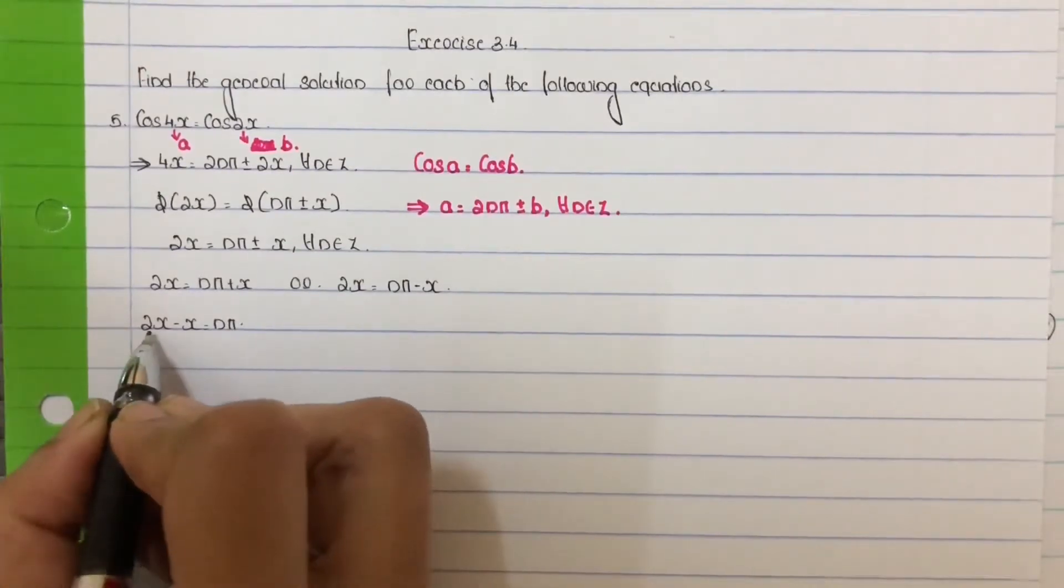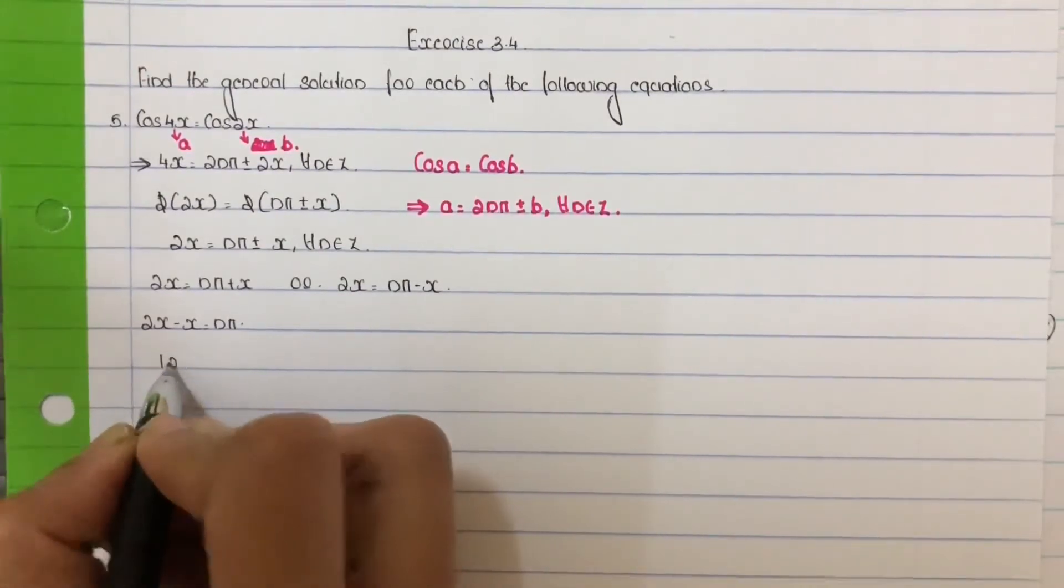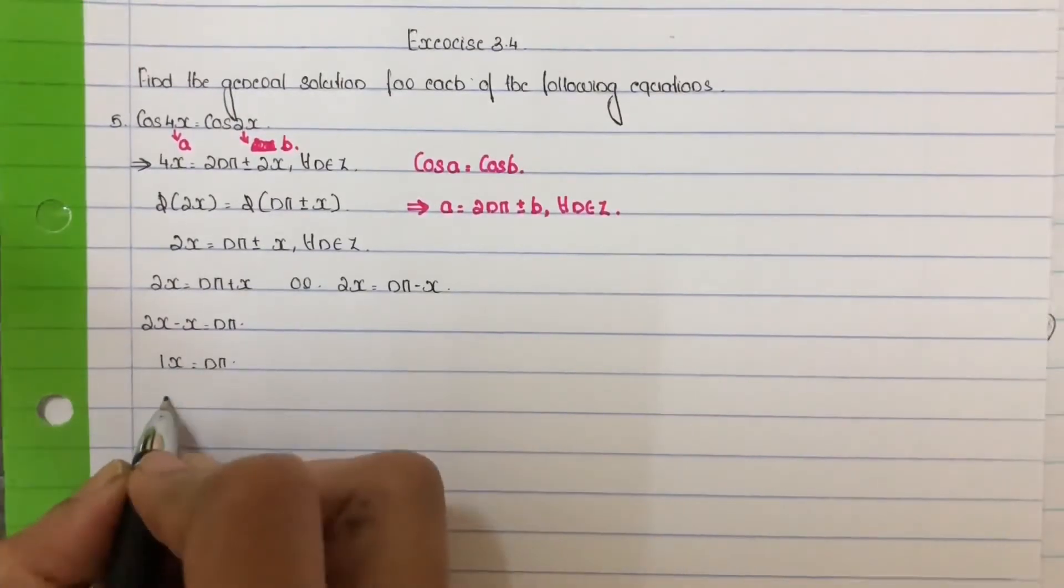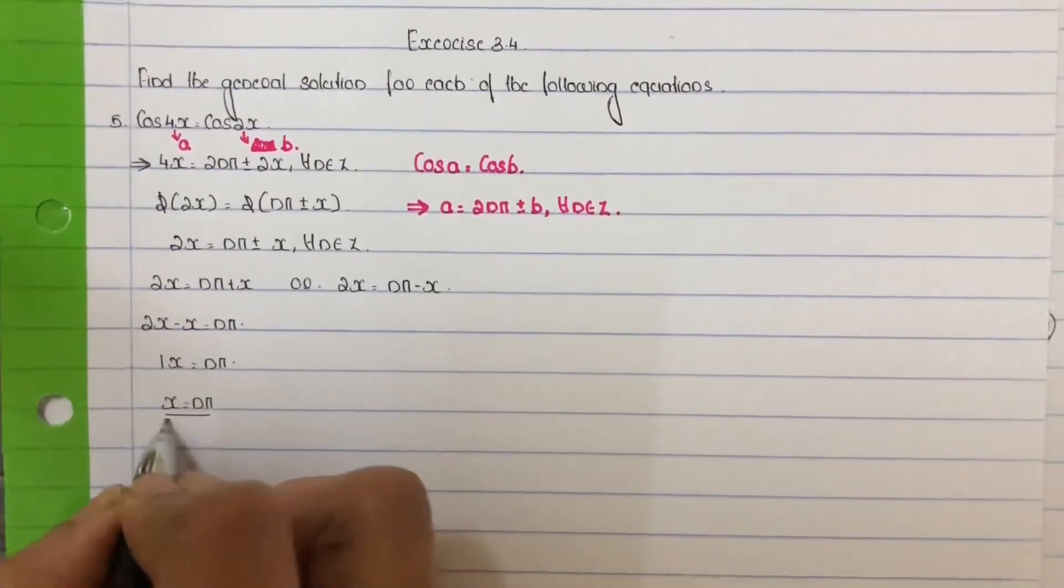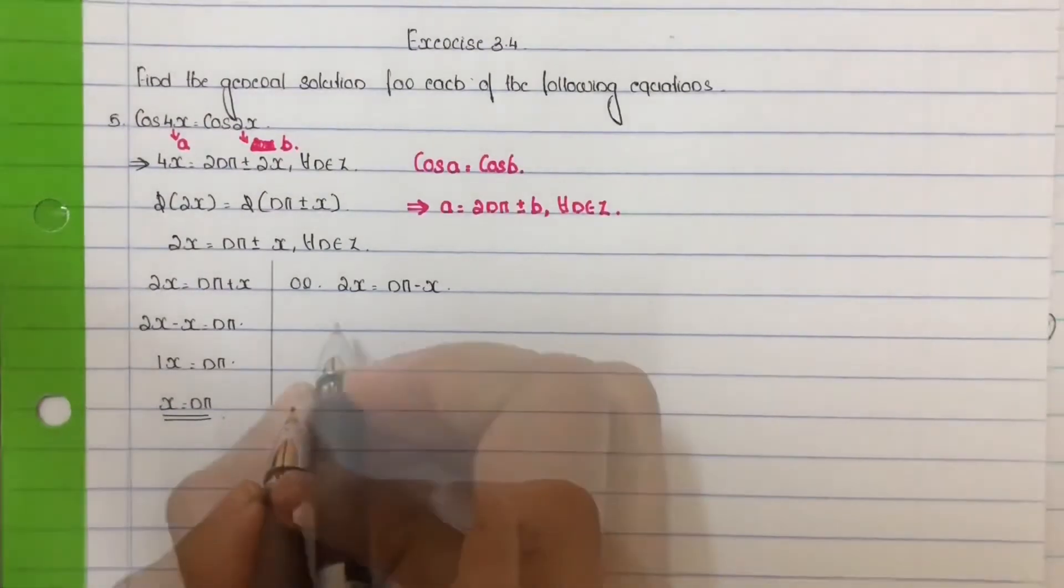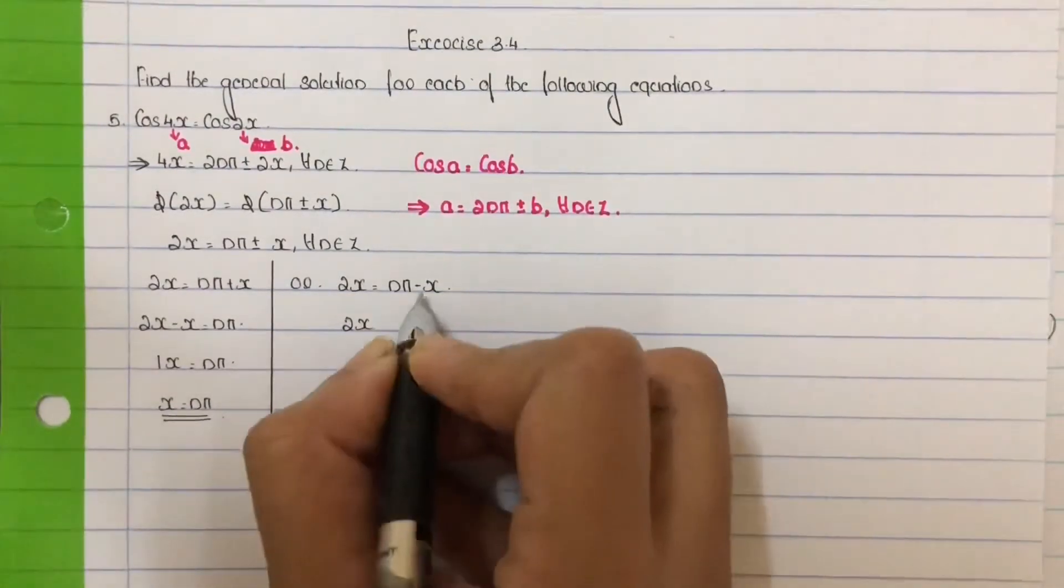2x minus x, that is 2 minus 1, equals 1x equal to nπ. That is x equal to nπ.